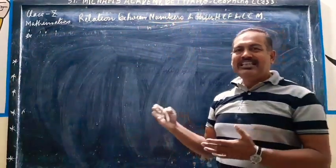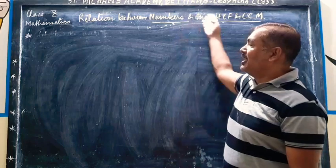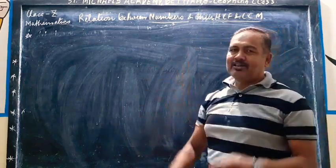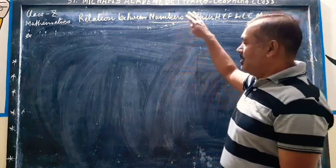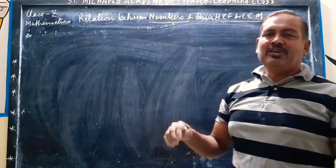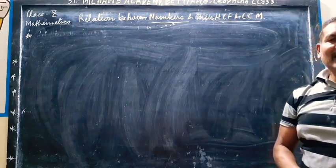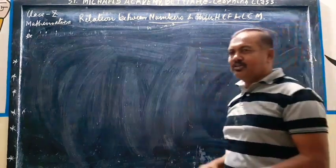Welcome students to the e-learning classes of Sermatis Academy. As I have promised, you have asked me two topics: the properties of irrational numbers and the second topic, the relation between numbers and then HCF and LCM. Now I am going to explain this topic.